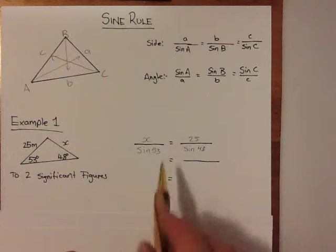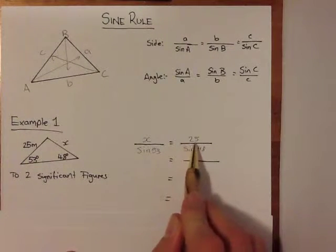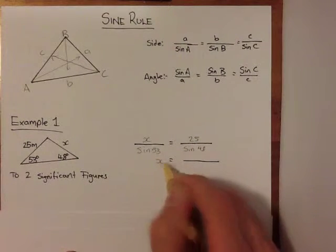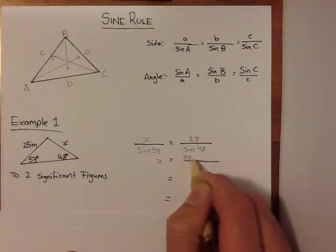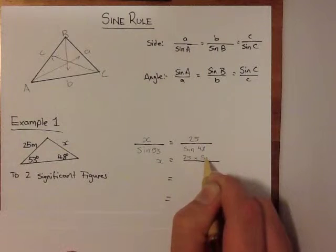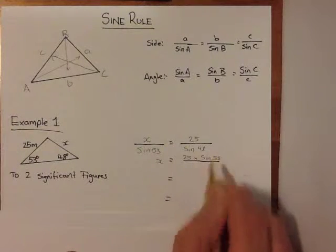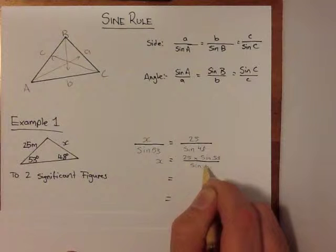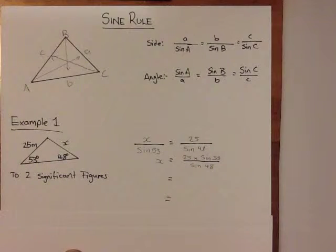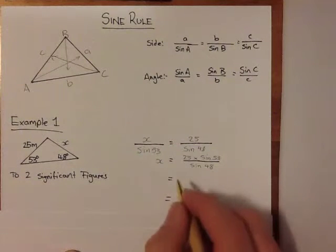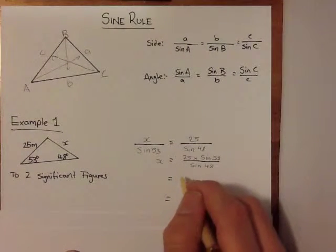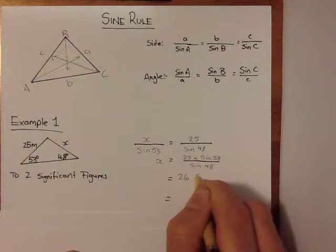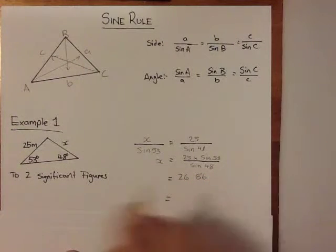The next step of this equation is to bring sine 53 to the other side, so we're left with X is equal to 25 times sine 53 divided by sine 48. At this stage, you just type that into your calculator, and your answer will be 26.86.